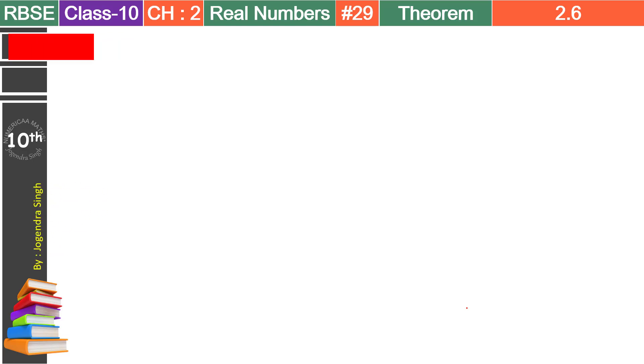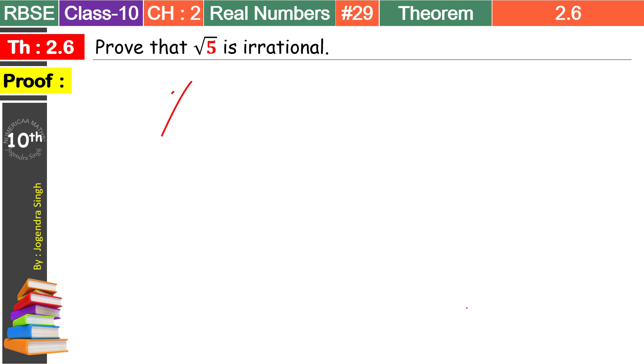Hi, this is Jogandar Singh and you are going to learn today theorem number 2.6 which is very important theorem from the chapter Real Numbers class 10. And what's the language of this theorem? Prove that root 5 is an irrational number.